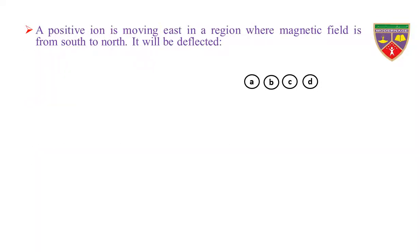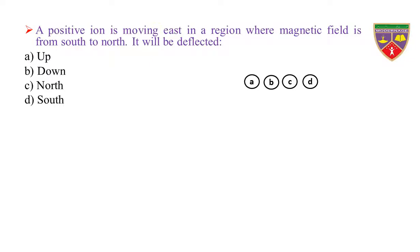A positive ion is moving east in a region where the magnetic field is from south to north. It will be deflected: Option A, up. Option B, down. Option C, north. Option D, south. The key is up.